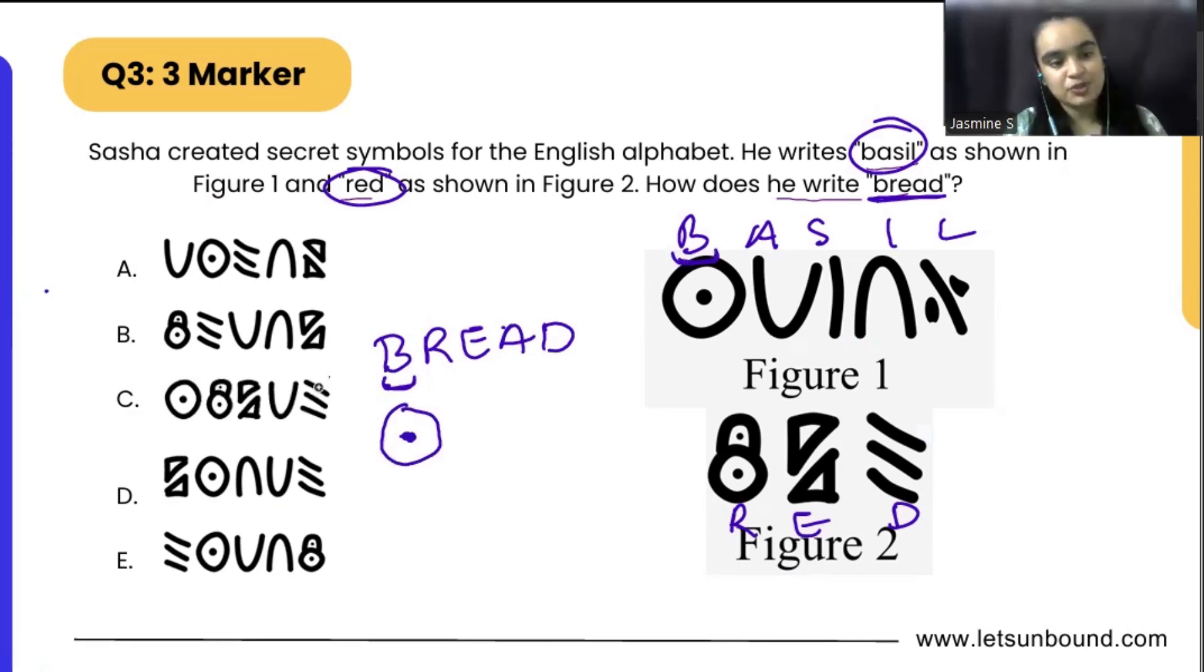And if you will see the options now, we are only having option C with the circle. That is our correct answer.